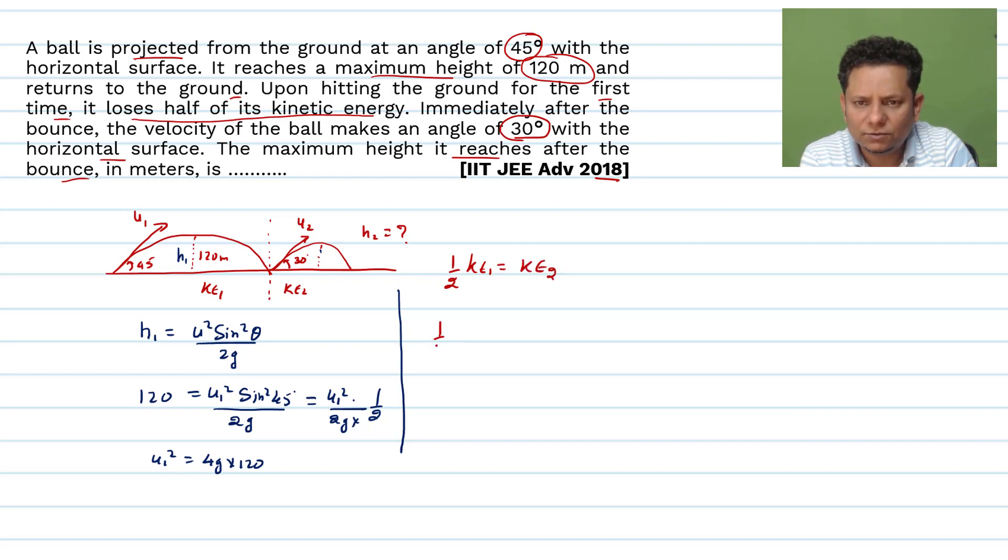We can write half m u1 squared will be equal to half m u2 squared. So half of half m u1 squared will be equal to m u2 squared. So half m cancel it.